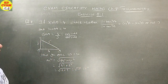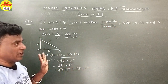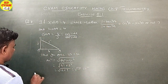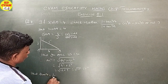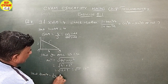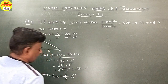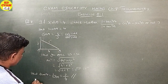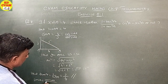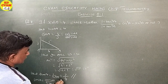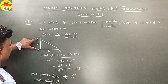By Pythagoras, AC equals square root of AB square plus BC square, which equals square root of 4 squared plus 3 squared, equals square root of 16 plus 9, equals square root of 25, which equals 5. So tan A equals 3 upon 4, sin A equals 3 upon 5, and cos A equals 4 upon 5.